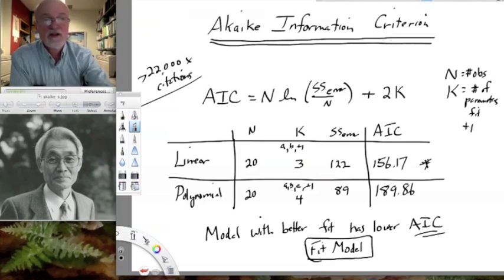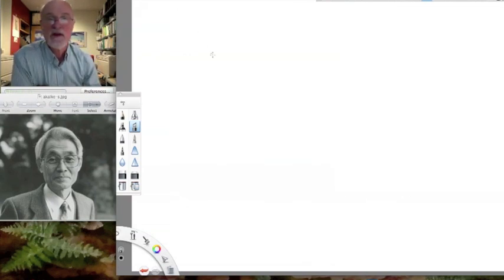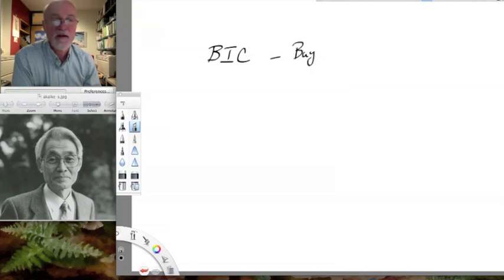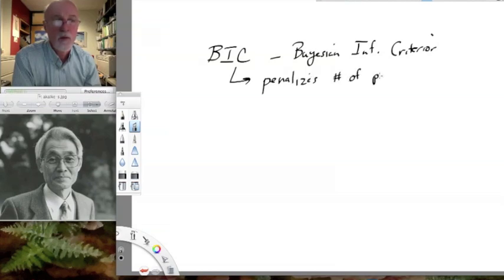Okay. JMP also provides you with a BIC, which is a Bayesian information criterion. And I believe, from what I've read,